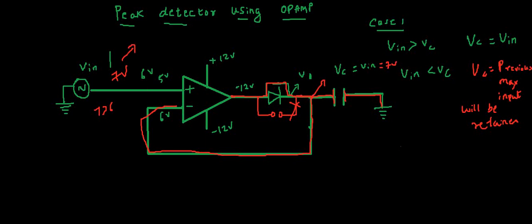So earlier VC was 6 volts. Let's make a table. When V in was 6 volts, initial VC is equal to 6 volts which is output. When V in became 5 volts, our output was still 6 volts. Now when V in again became 7 volts, our output became 7 volts.